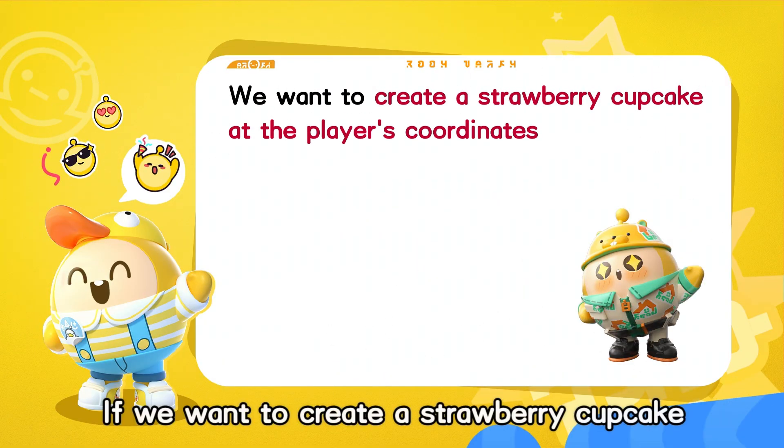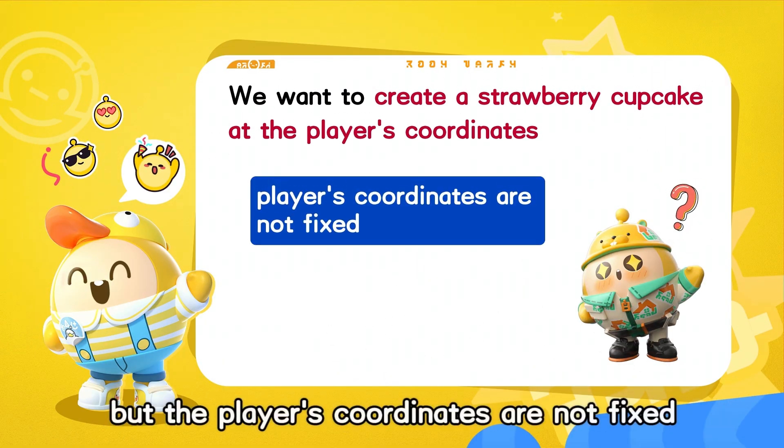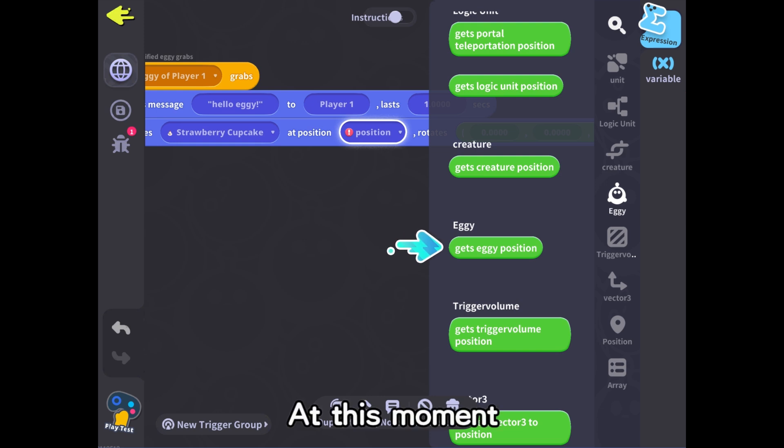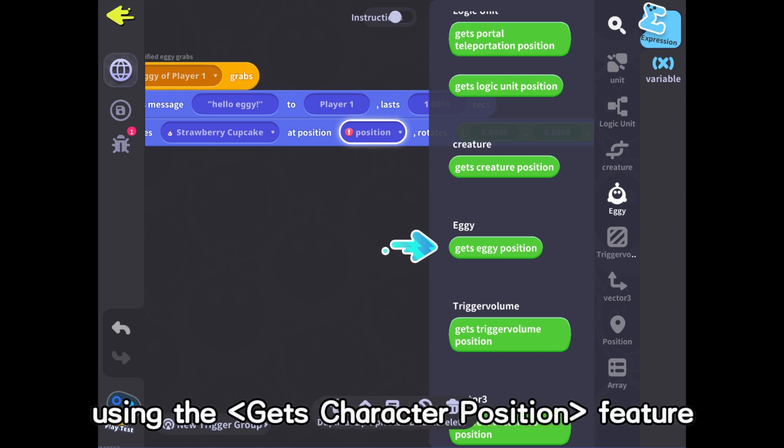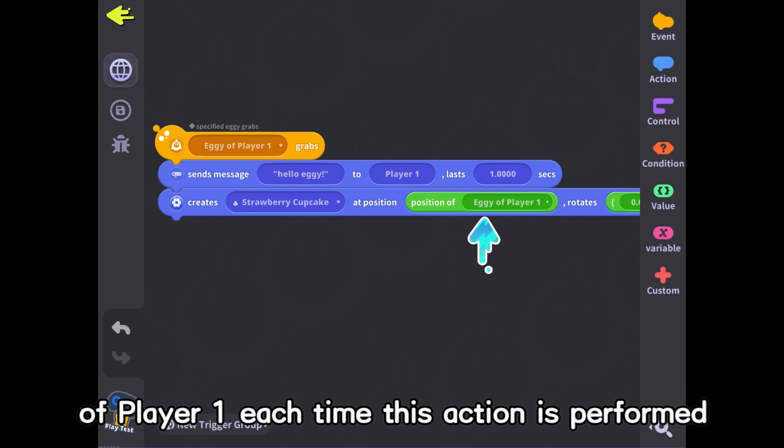If we want to create a strawberry cupcake at the player's coordinates, but the player's coordinates are not fixed, we need to precisely describe the specific position. At this moment, using the get character position feature in value blocks, Eggie code will fetch the real-time position of Player 1 each time this action is performed.